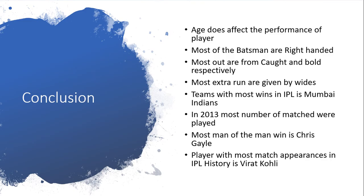To conclude: age is affecting the performance of the player as seen in the chart, most batsmen are right-handed, and most dismissals are from catch and bowled. Most extra runs given are wides. The team with the most wins in IPL is Mumbai Indians. In 2013, the most number of matches were played. The most Man of the Match wins belong to Chris Gayle, and the player with the most match appearances in IPL history is Virat Kohli.